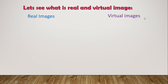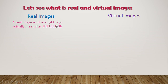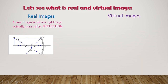So what is a real image and what is a virtual image? Real images are where light rays actually meet after reflection. You can see the incident rays falling onto the mirror, getting reflected. These reflected rays are meeting at a point where the image is formed. Because the reflected rays are actually meeting, the image formed is called a real image.